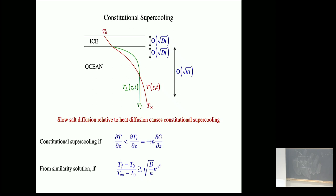We're essentially using the Stefan condition, which tells us about whether the process is exothermic or endothermic — it's the difference in enthalpy between solid and liquid, positive or negative depending on whether you're exothermic or endothermic. If the process were endothermic, you wouldn't get morphological instability. We're talking about situations where you need to add heat to turn solid to liquid, or equivalently where the freezing process is exothermic.